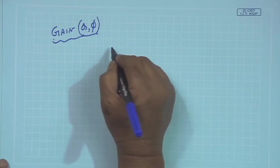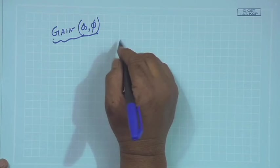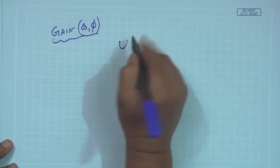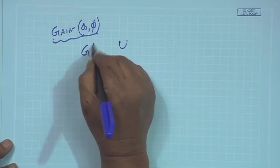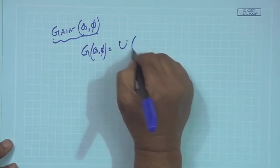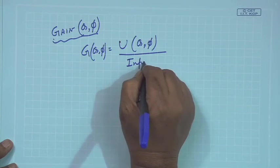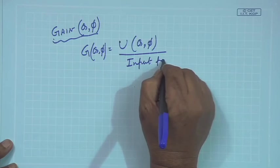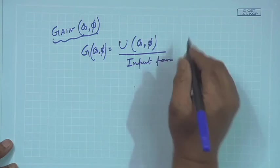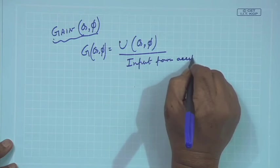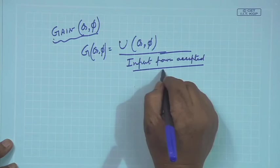That is why the denominator of gain, unlike directivity, uses input power accepted. The gain function G(θ, φ) is defined as U(θ, φ) divided by the input power accepted divided by 4π.